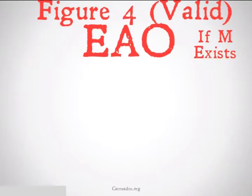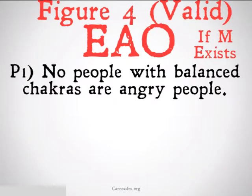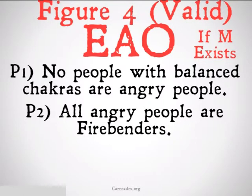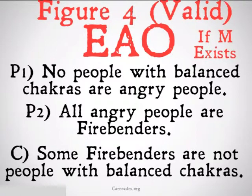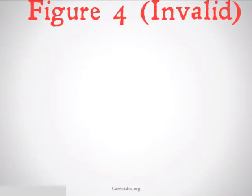Figure 4 valid for EAO — this is only going to be valid if M exists. No people with balanced chakras are angry people. All angry people are firebenders. Therefore, some firebenders are not people with balanced chakras. This is going to be valid because M, which is angry people, exists. Angry people do exist, so it's going to be valid.